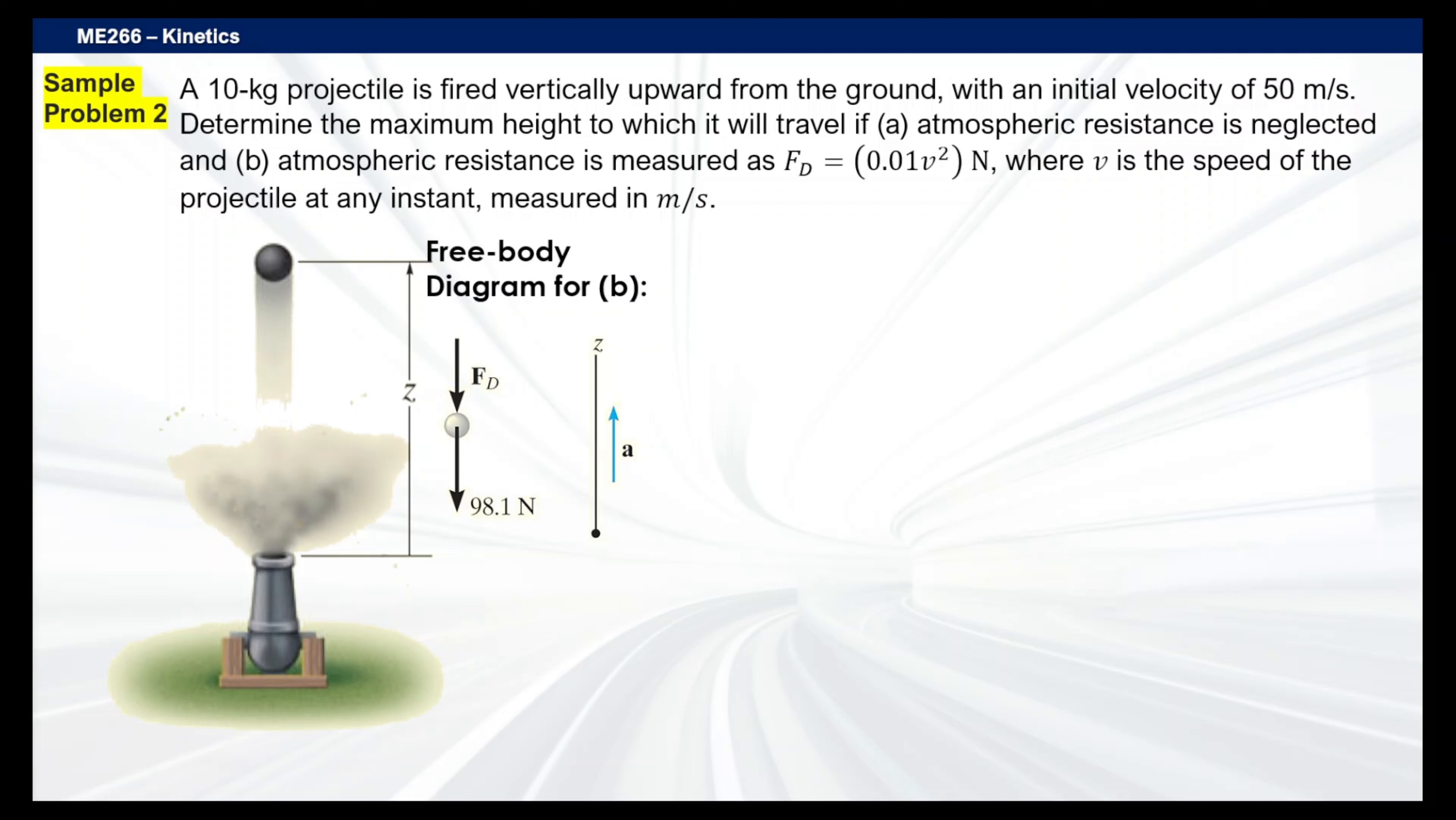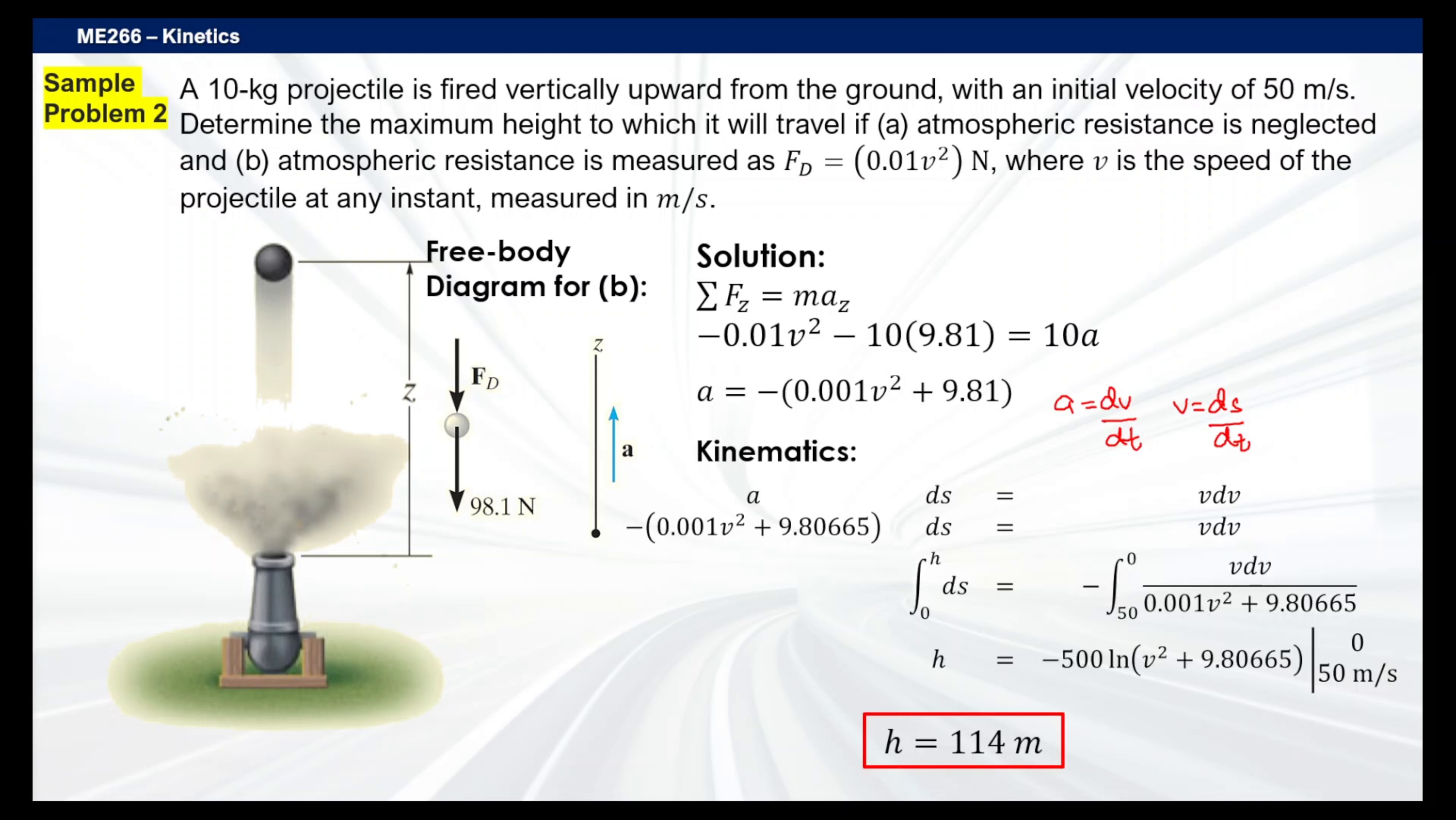If you recall, we're going to recall our equations of kinematics: A is DV over DT, and we have V which is DS over DT. All we have to do is equate them by time, and we will have this particular equation—A DS equals V DV. Substituting everything, we will get this particular line of equation, and we get the integral on both sides. We will have H equals 114 meters—113 point something, but if rounded, it's going to be 114 meters.